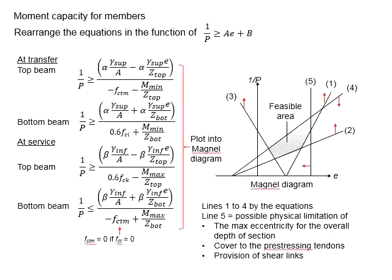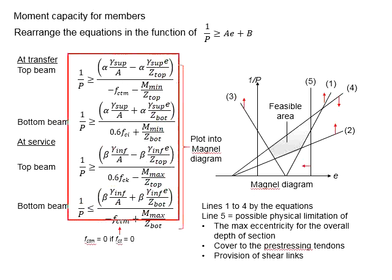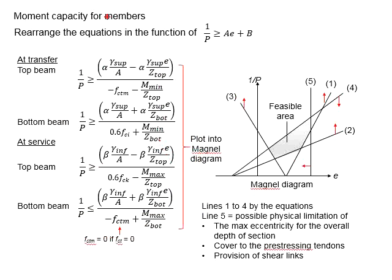You know that in order to construct the Magnel Diagram, you will require at least four formulas. These formulas are derived from the basic stress equations of the beam. Within the formula here, you will need to substitute the value of alpha and beta, gamma superior and gamma inferior, the geometrical properties such as area, Z_top and Z_bottom, as well as the moment M_minimum and M_maximum.